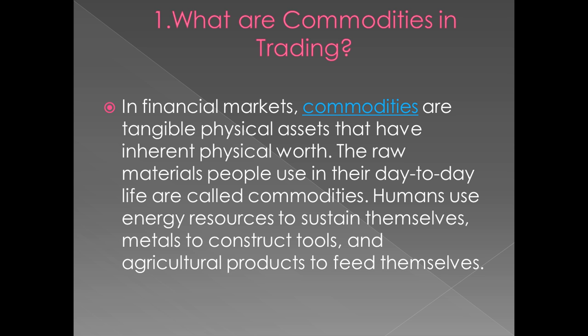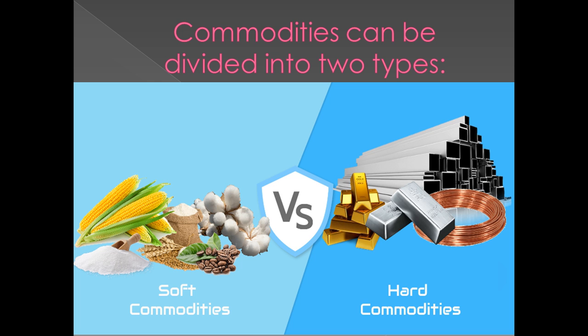In the physical market, commodities are tradable physical assets that have inherent physical worth. The raw materials that people use day by day are called commodities. Commodity means the products you use day by day — consumable goods like oil, and also day-by-day products. Humans use energy resources to sustain themselves, metals for construction and tools, and agriculture products to feed themselves — these are commodities.